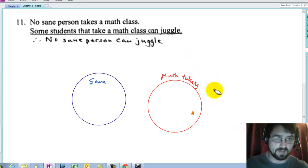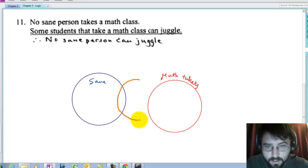And I don't want to validate it. If possible, I want to invalidate it. So is there any other way I can draw the picture? And the answer is yes, I can. How else can I draw it? Let's go to the center here. Here's jugglers. And I'm going to say that some students that take math can juggle. There's that.